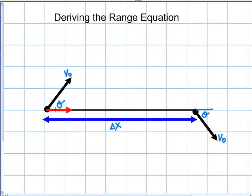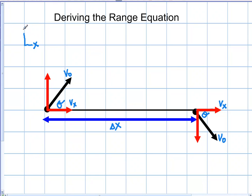If I draw out these components, I have my x component and my y component at launch, and my x component and y component at landing. We know that there's symmetry involved with the y component, while the x component is the same throughout — it does not change because there is never an acceleration in the x direction. We should always define our axes: positive y is up and positive x is to the right.